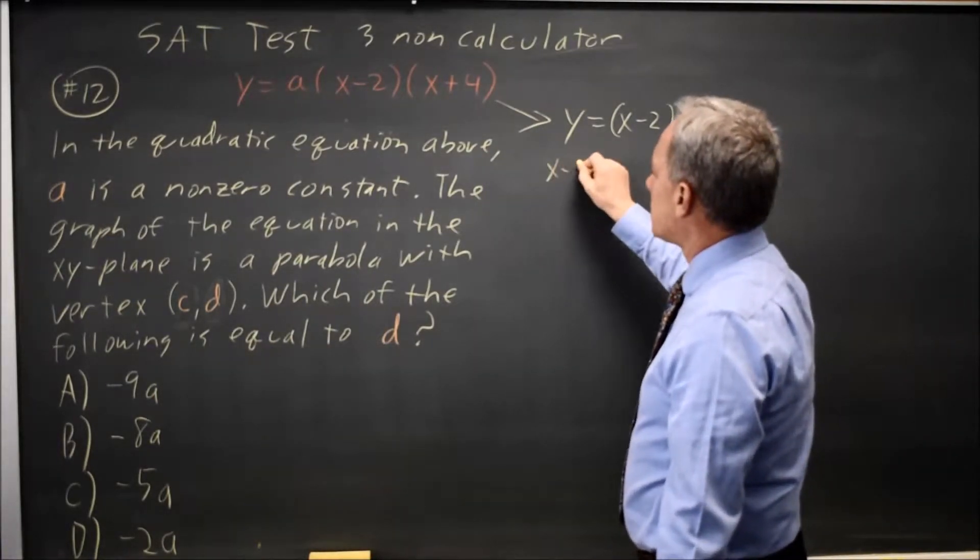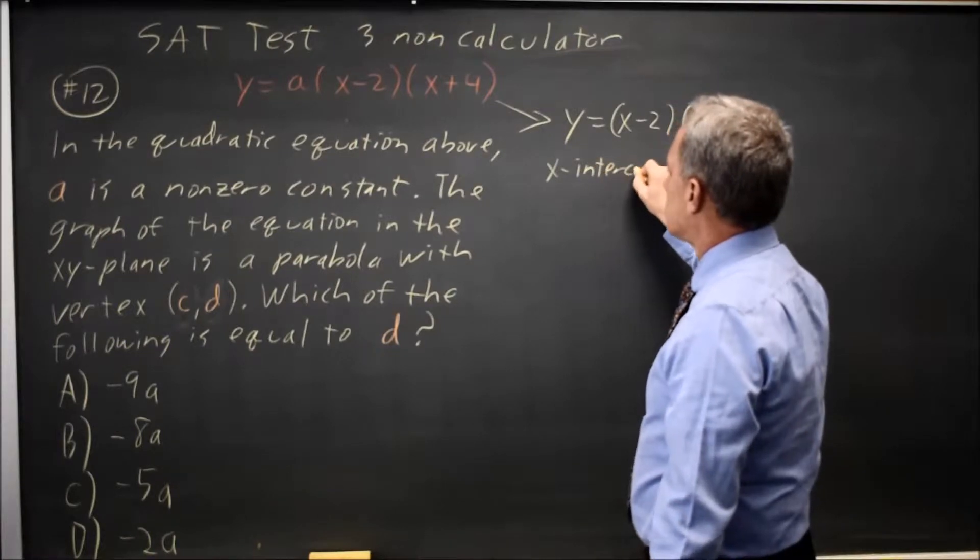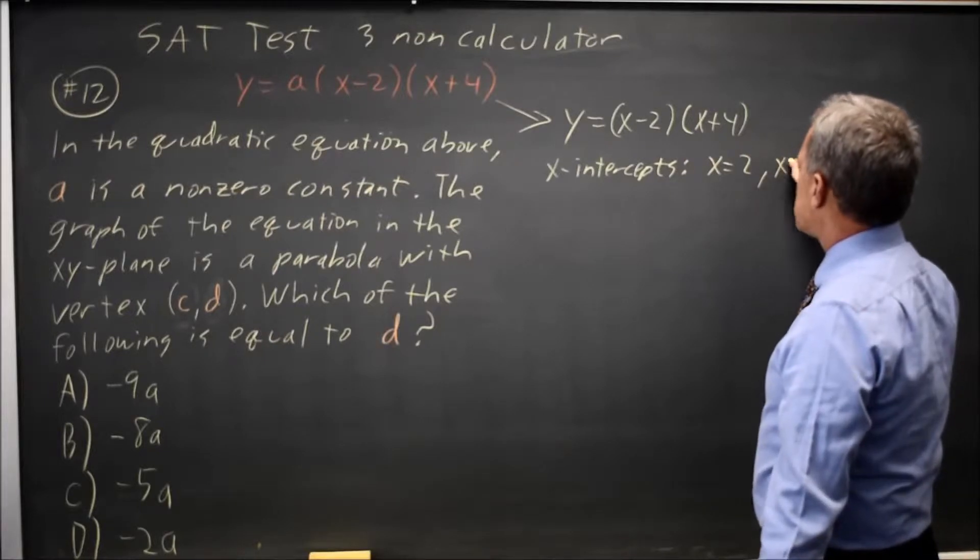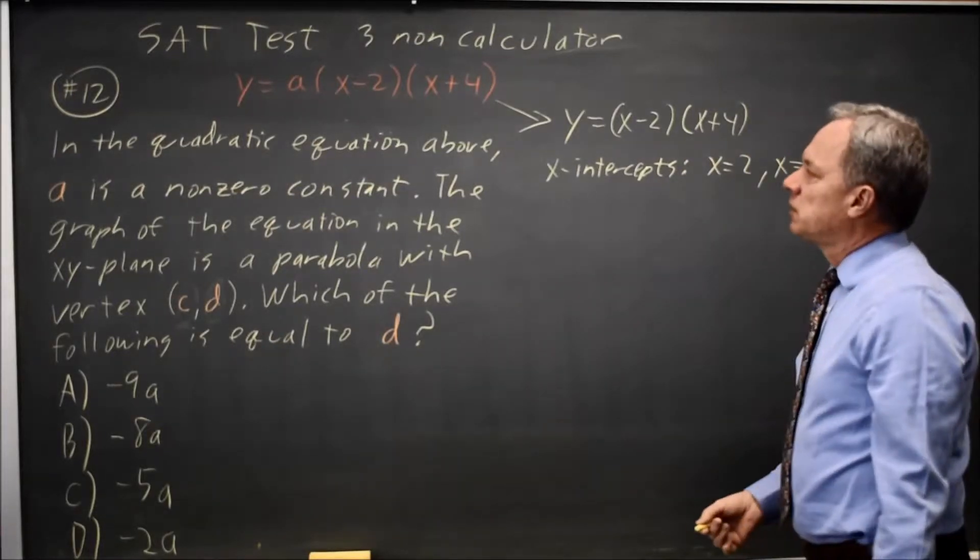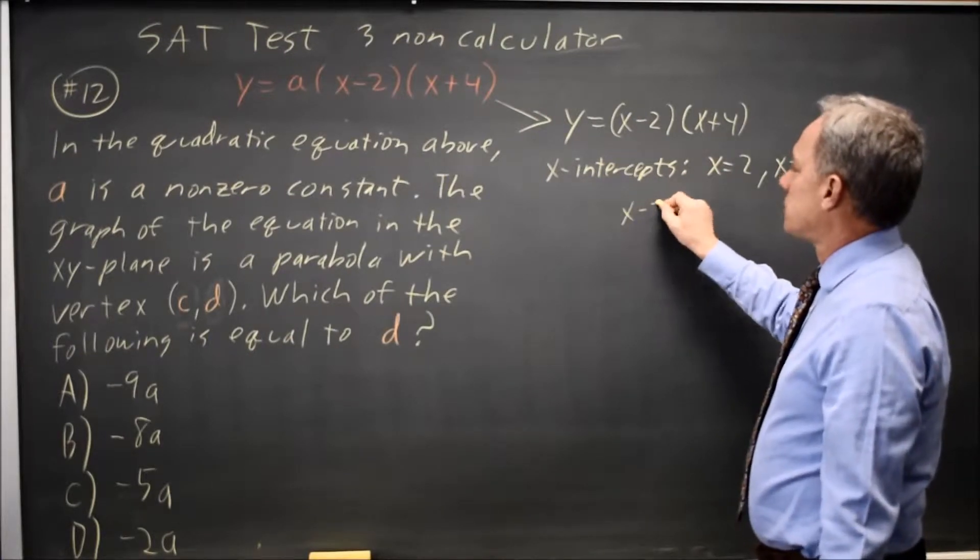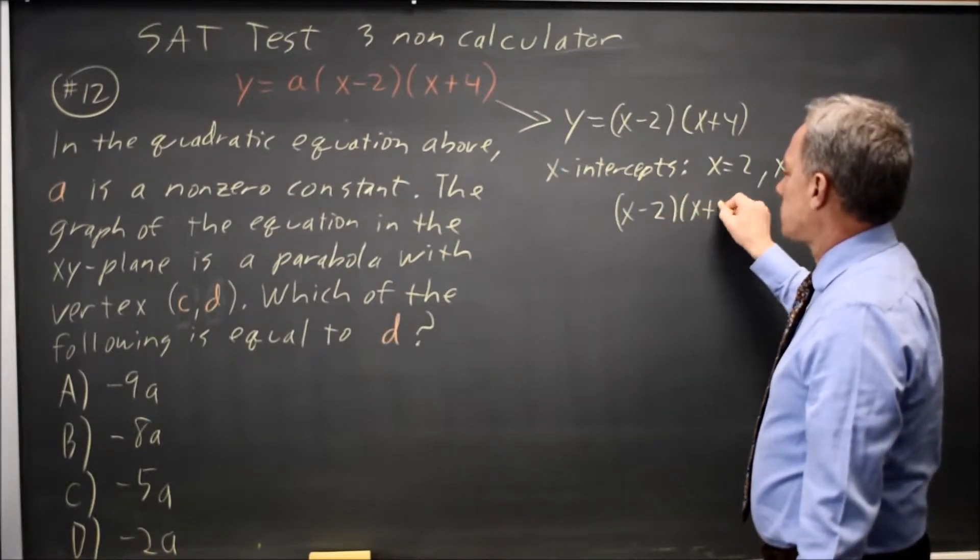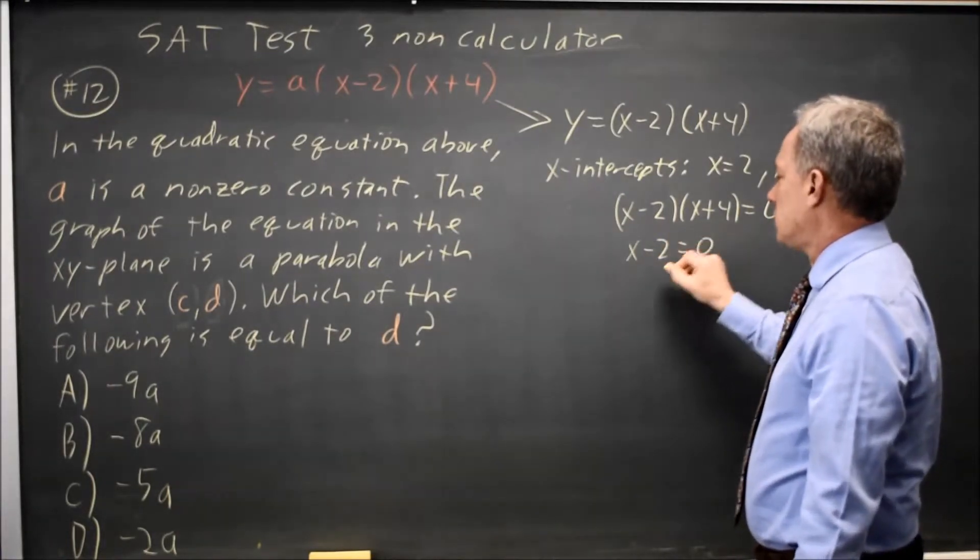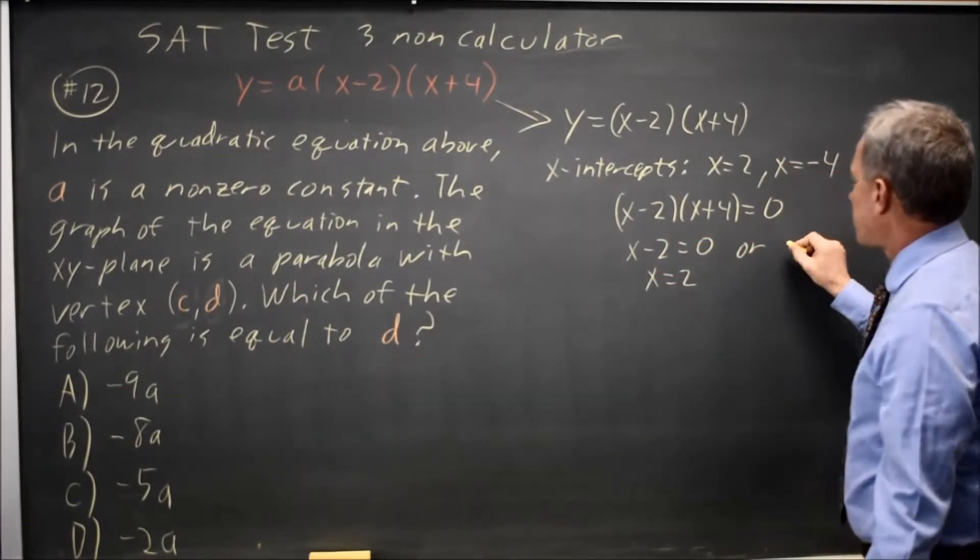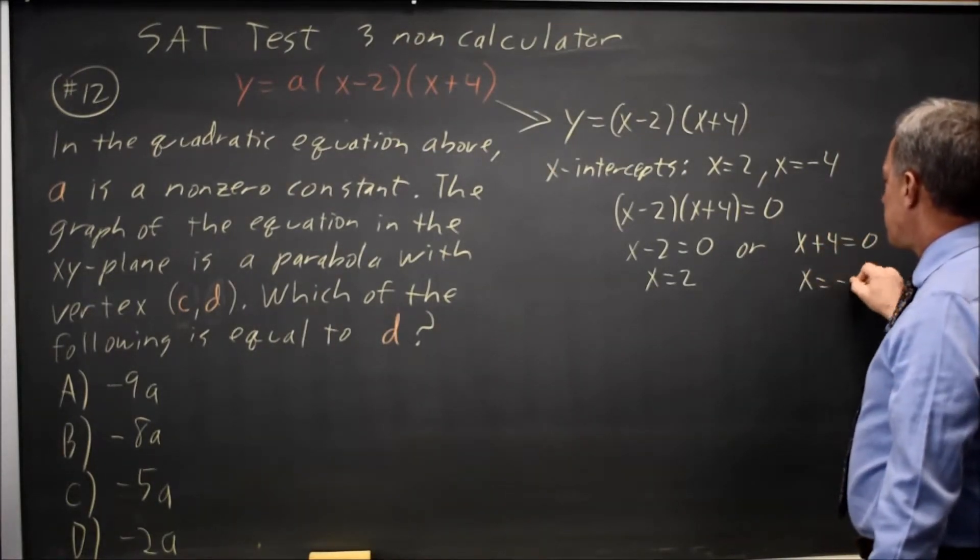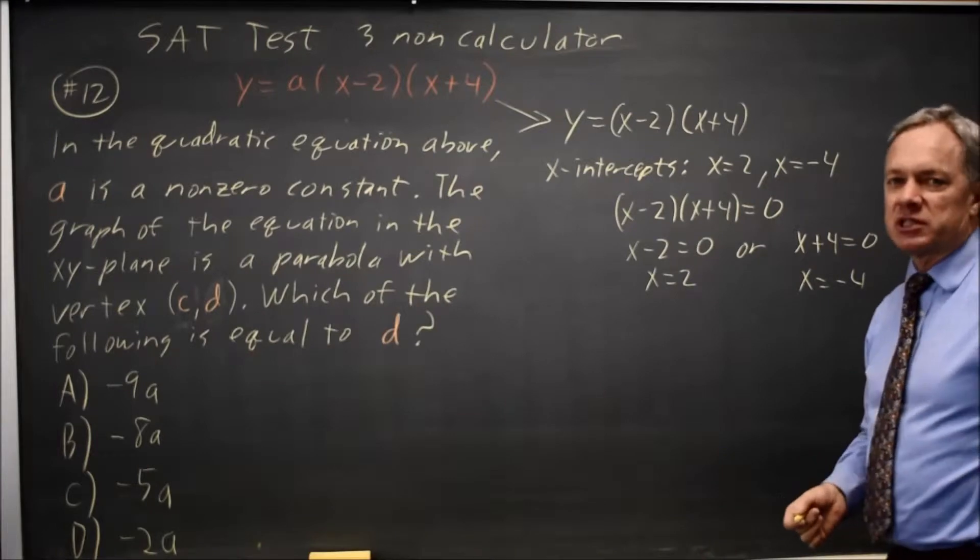My x-intercepts are x equals 2 and x equals negative 4. X-intercepts occur when y equals 0, so (x minus 2)(x plus 4) equals 0. Either the first factor is 0, so x equals 2, or the second factor is 0, so x equals negative 4.